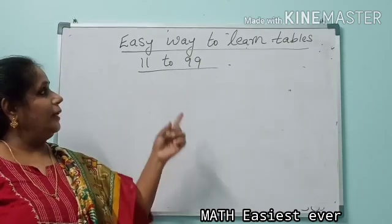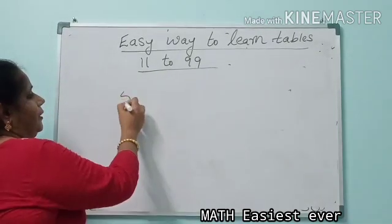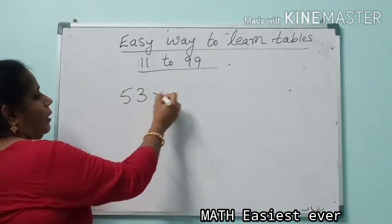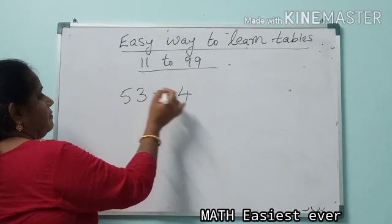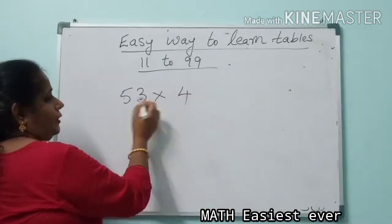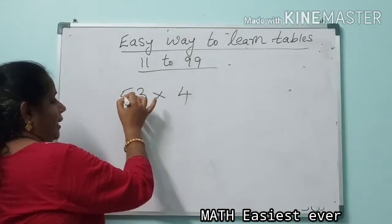Next, students, now we will see how to multiply a two-digit with a one-digit in an easy way. Now usually what you do, 4 threes are 12, that's your normal way. This is somewhat easier than that.